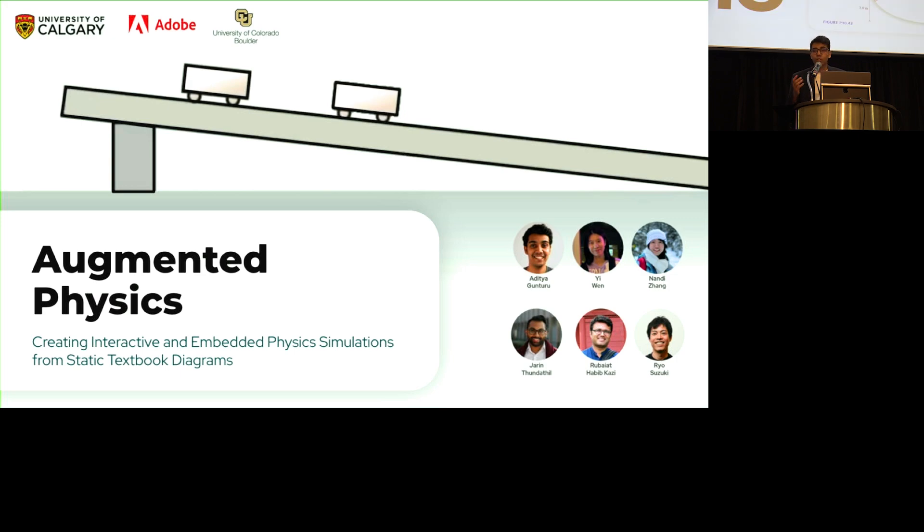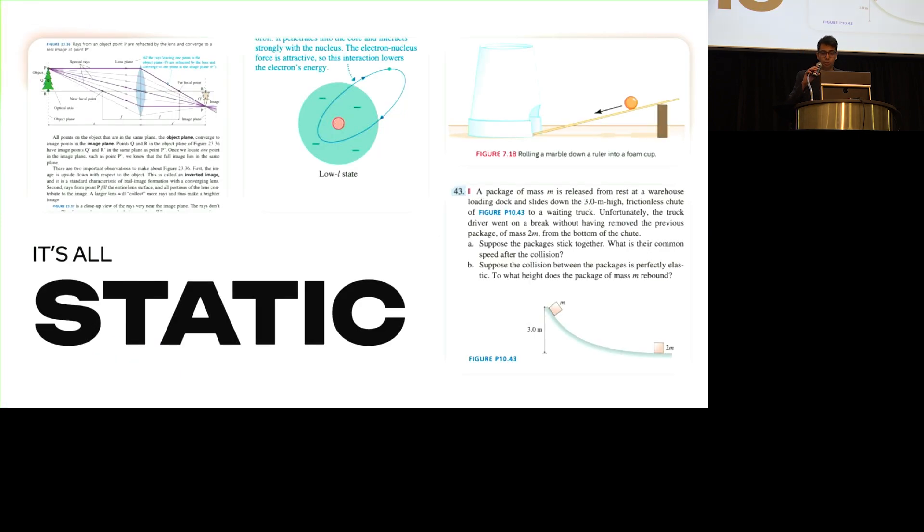We follow up high school physics. We all know that physics textbooks have a lot of diagrams in them, but all of these diagrams are static. They try to convey visual motion in these diagrams. Physics is all about visual intuition, but they're all static. These diagrams don't represent time with varying motion.